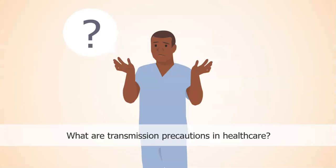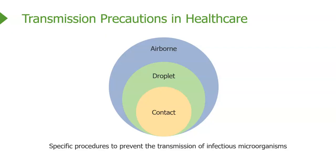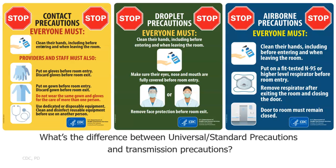Let's start off with a simple question: what are transmission precautions in healthcare? Transmission precautions in healthcare are very specific procedures to prevent the transmission of infectious microorganisms. We've got three kinds: contact, droplet, and airborne. Here are the CDC posters — they outline the differences, and you'll often see these very posters posted outside of the rooms of patients who are on these types of precautions.